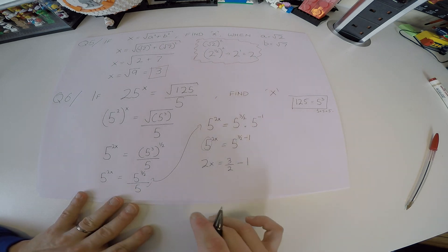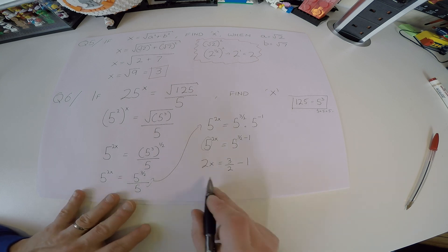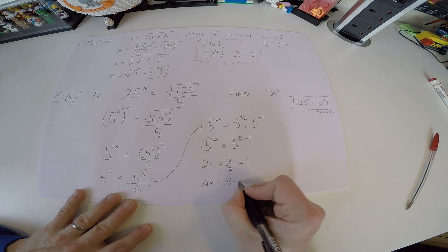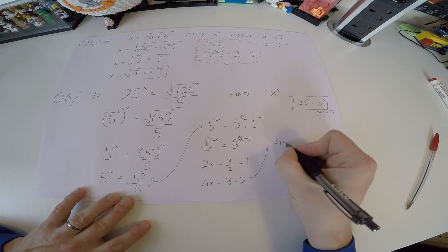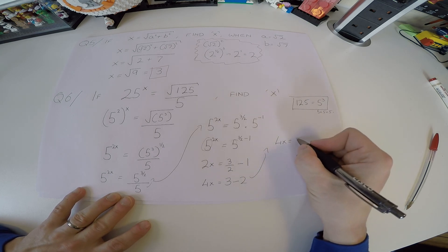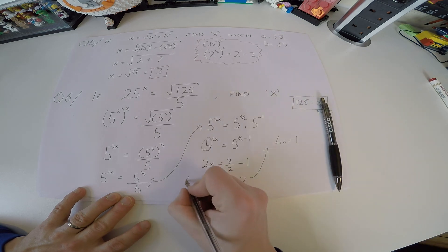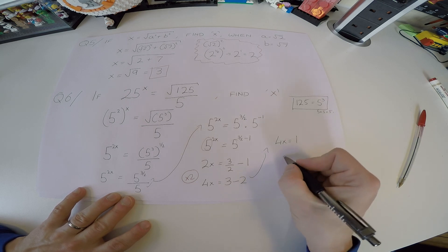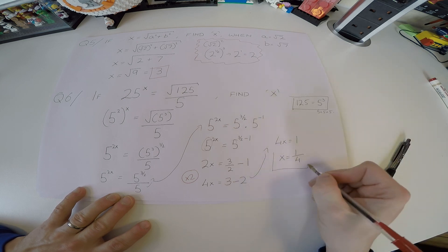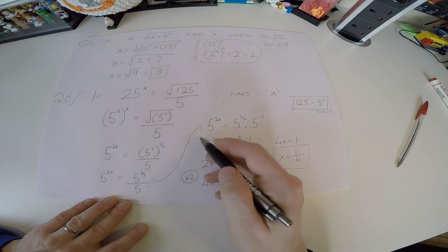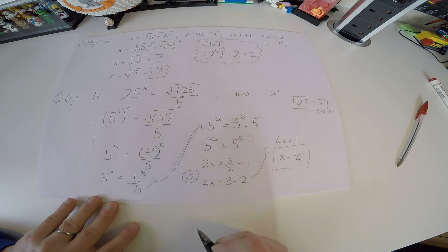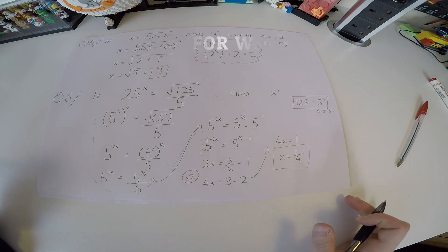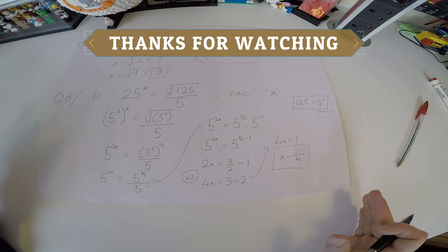This is now a simple algebra problem. Multiply every term by 2 to clear the fraction: 4x = 3 − 2 = 1, so x = 1/4. It's a potentially very hard problem, but taking baby steps the whole way gets us there. Any questions, ask in the comments — if you have similar examples you can't do yourself, ask there too.